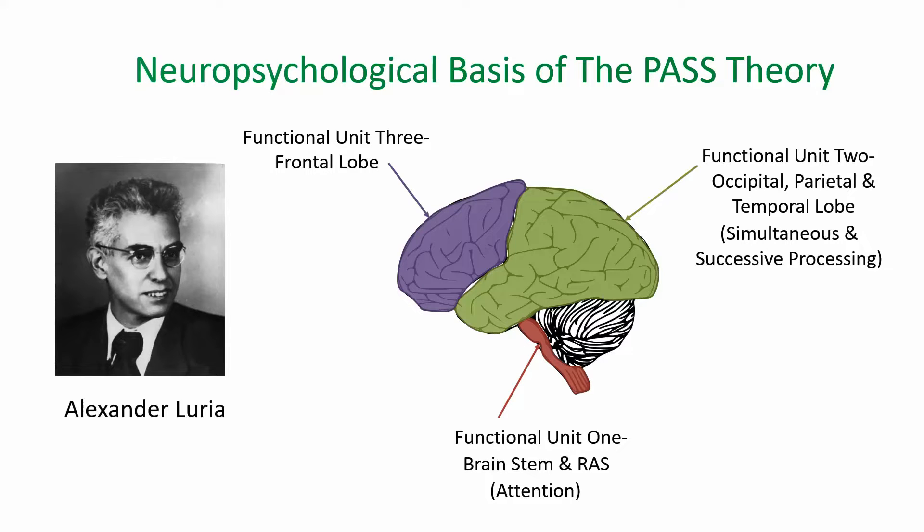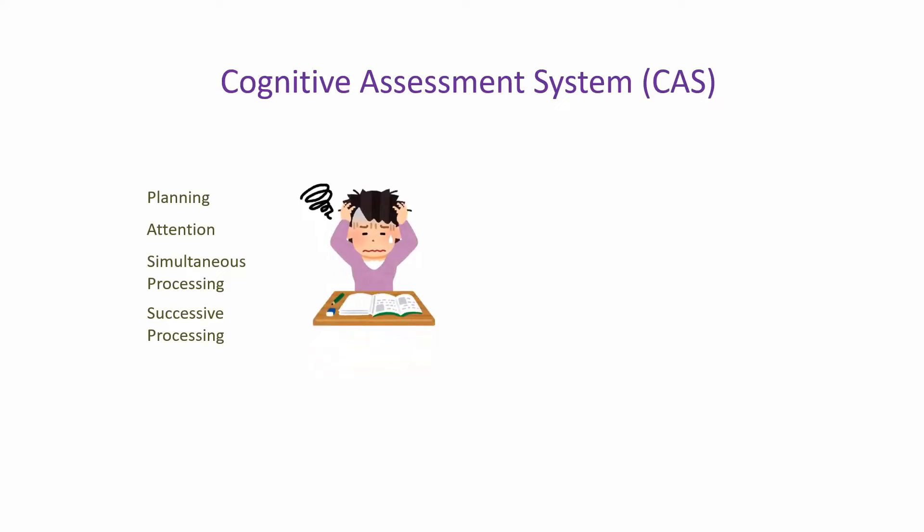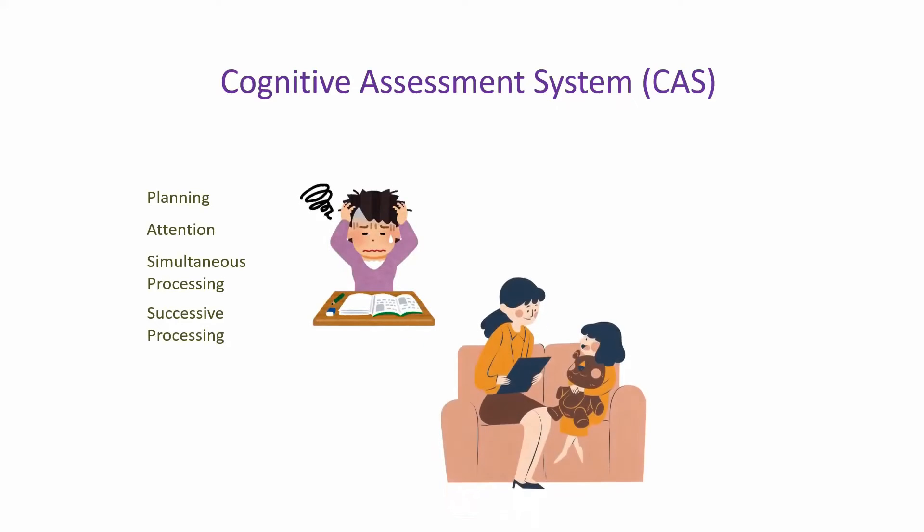The PASS theory is used in the Cognitive Assessment System, which is a type of psychological assessment to evaluate intelligence based on these four components. It's particularly useful in identifying cognitive strengths and weaknesses in children and in guiding interventions for learning disabilities, attention deficit hyperactivity disorder, and other cognitive challenges. Unlike traditional IQ tests which focus on a single score, PASS theory gives a more detailed picture of how someone processes information.